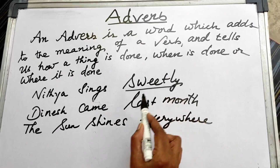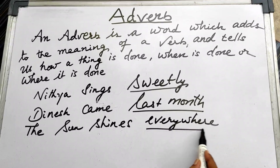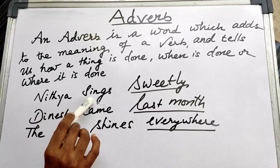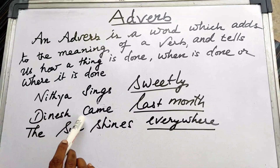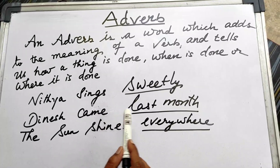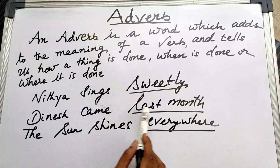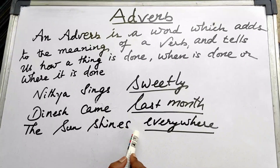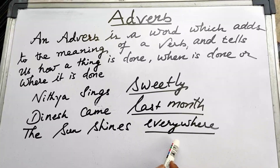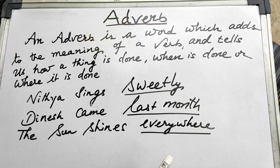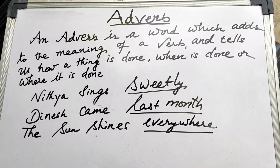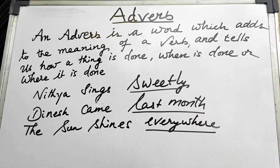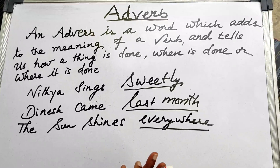So in these examples, the adverbs are: 'sweetly,' 'last month,' and 'everywhere.' Sweetly qualifies the verb 'sings,' last month qualifies the verb 'came,' and everywhere qualifies the verb 'shines.' So an adverb is a word which qualifies the verb — it gives add-on information about the verb.